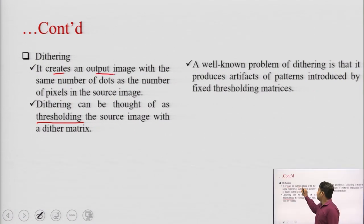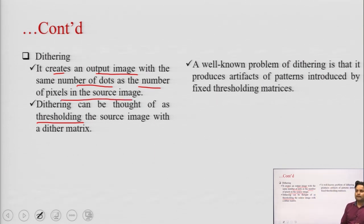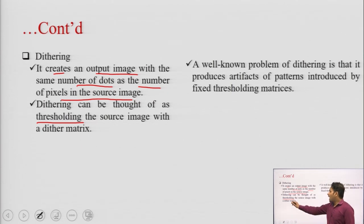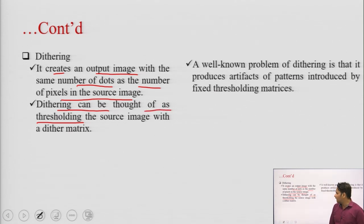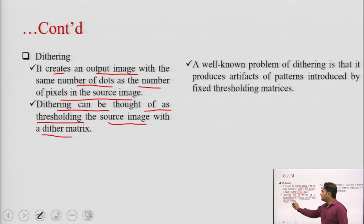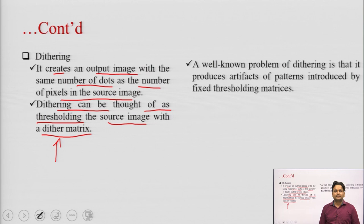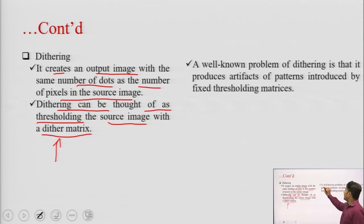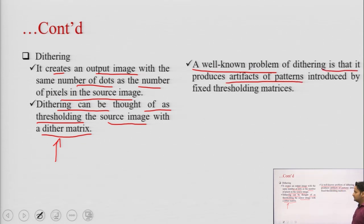Dithering creates an output image with the same number of dots as the number of pixels in the source image. So if we have an 8×8 input image, then the output is also an 8×8 output image. Dithering can be thought of as thresholding the source image with a dithering matrix, which is a constant matrix repeatedly used in the halftoning process. A well-known problem of dithering is that it produces artifacts and patterns introduced by fixed threshold matrices.